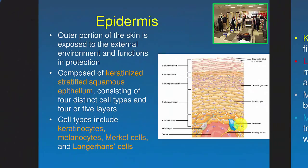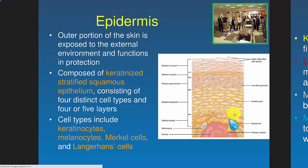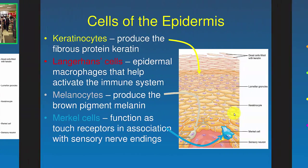The epidermis is the outermost portion. It has several cells — four different cell types — but a lot of keratinized stratified squamous epithelium. They tend to change their shape as they dry out and move outward. This is a superficial area; down deeper are the newer cells. We'll get to those cell types on the next slide.